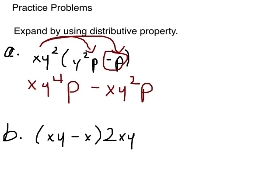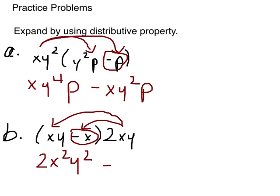Here, it's just written backwards. The only difference is 2xy is going to distribute over here and over here, keeping this sign with that x. So 2xy times xy would give us 2x y squared y squared, minus 2x squared y.